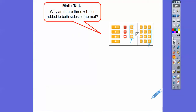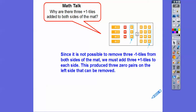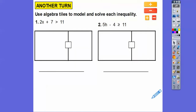Why are there three plus-one tiles added to both sides? We wanted to make zeros to cancel out. When we added these three plus-one tiles to both sides, we cancel out the negative tiles and we're left with the x's. Since it's not possible to remove the three negative-one tiles from both sides, we must add three plus-one tiles to both sides so the zero pairs on the left side get removed. Now let's use algebra tiles to model and solve more inequalities.